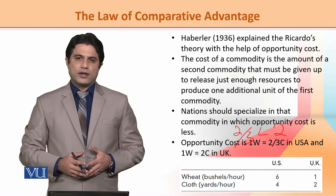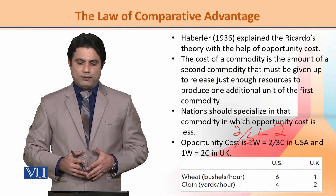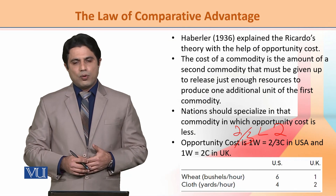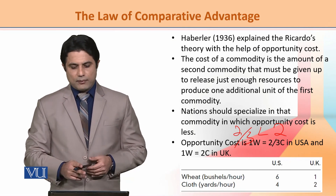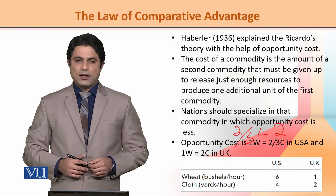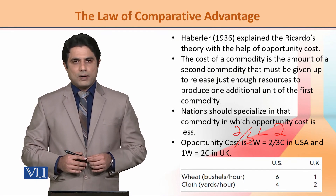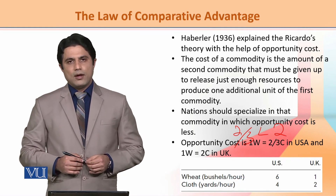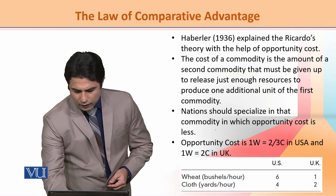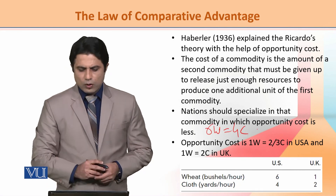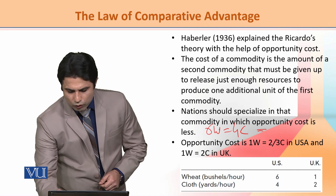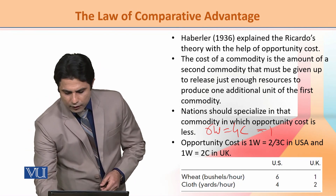Vice versa, we can also discuss where the UK will go. If we look at it from the cloth side: in the USA, 6 wheat equals 4 cloth, so 1 cloth equals 6/4 unit of wheat, which is 3/2 of wheat.